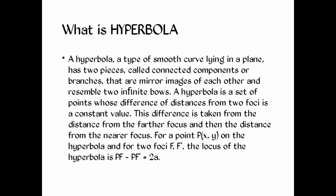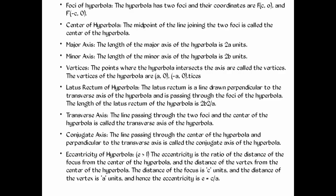For a point P with coordinates (x, y) on the hyperbola and two foci F and F prime, the locus of the hyperbola is: PF minus PF prime is equal to 2a.